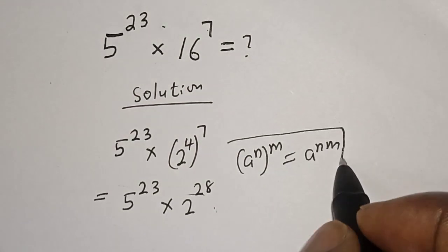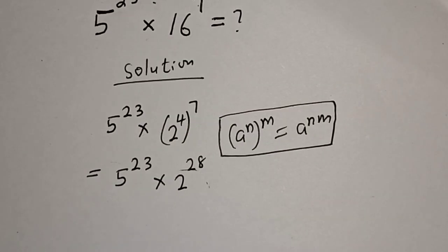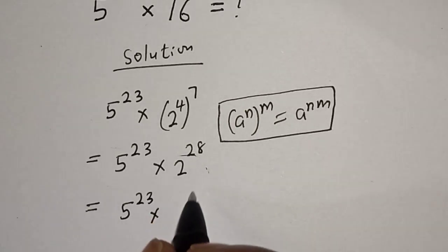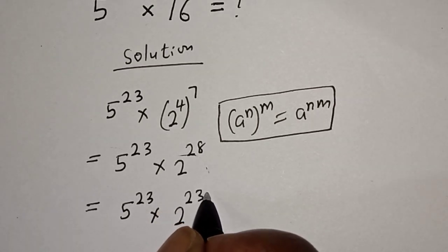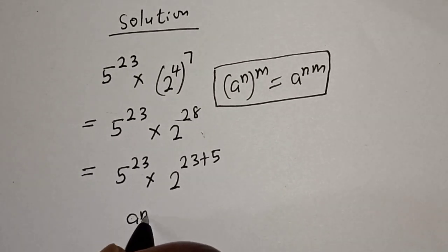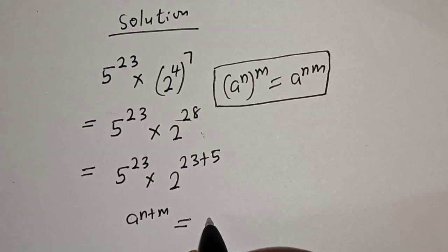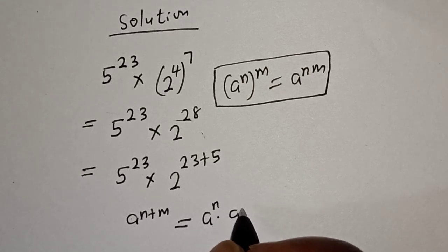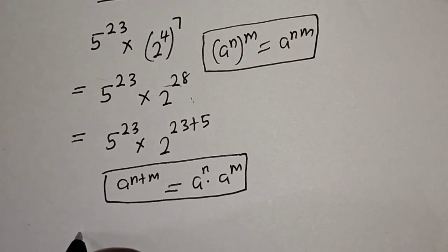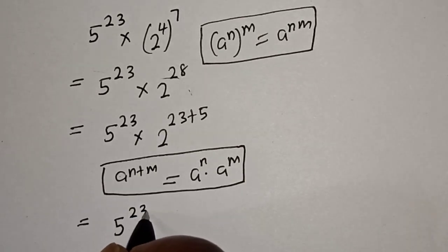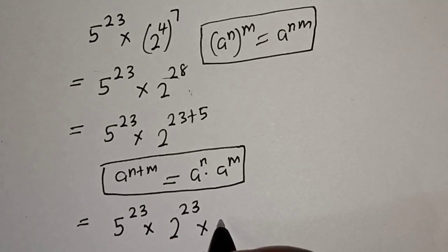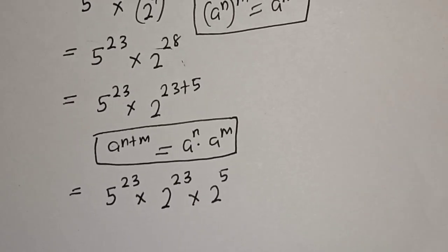Then this is equal to 5 raised to power 23 multiplied by 2 raised to power 23 plus 5. Take note of this rule: a raised to power n plus m is equal to a raised to power n multiplied by a raised to power m. Then this is equal to 5 raised to power 23 multiplied by 2 raised to power 23, times 2 raised to power 5.